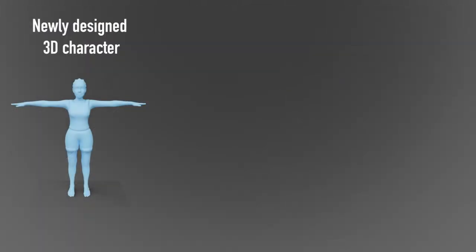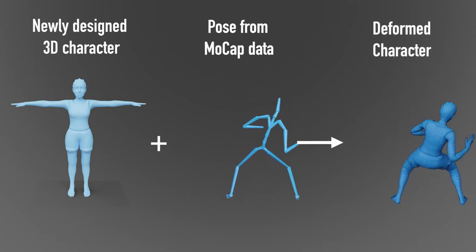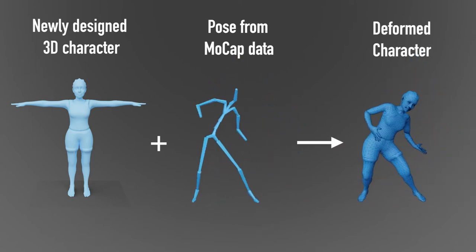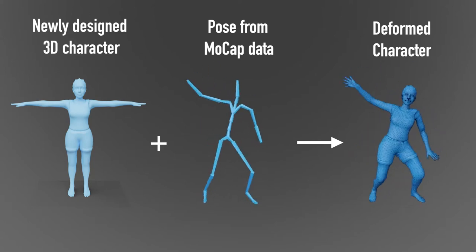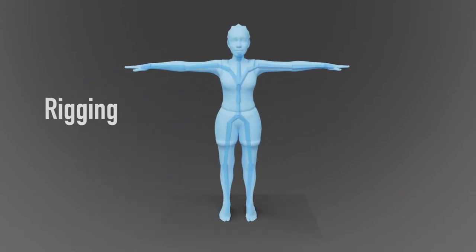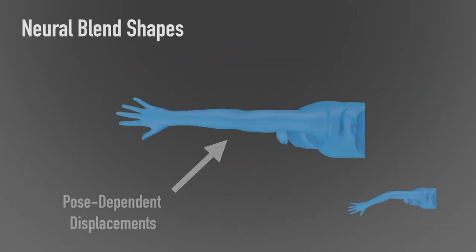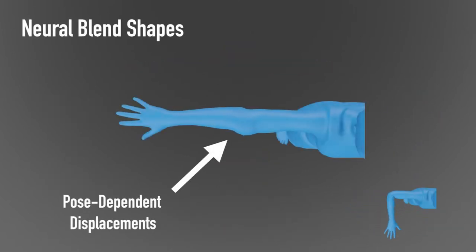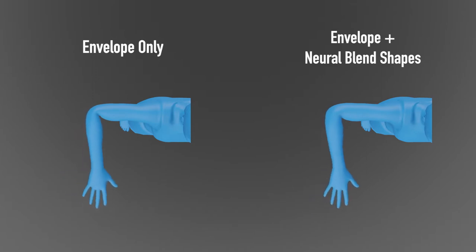We present a framework that makes the mocap-to-deformation process simple. Our method can rig and skin new characters with a specified skeletal structure and generate neural blend shapes — a set of residual and pose-dependent displacements. The blend shape refinement results in high-quality deformations, which are especially important in the joint regions.